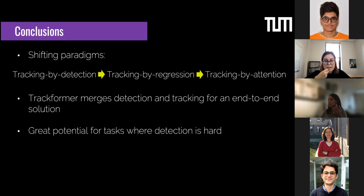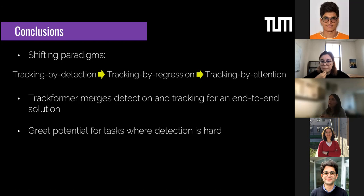This paradigm has real potential for tasks where detection is hard — for example, small pedestrians in challenging sequences where there is very little detection evidence. Since you can see something moving, you need less detection evidence and more tracking evidence. By merging these two tasks, small detections could be further improved through the tracking signal.